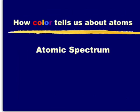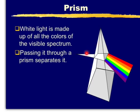Atomic Spectrum: How colour tells us about atoms. Here is something you are all familiar with — shining a beam of white light through a triangular glass prism, and the seven colours of light will be dispersed like that.